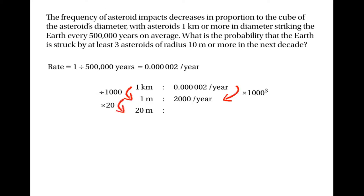Now to turn one metre into 20 metres, we need to multiply by a factor of 20. And if we multiply that diameter by a factor of 20, we'll need to divide the rate by a factor of 20 cubed. So now we need to do the sum 2,000 divided by 20 cubed, which gives us the answer 0.25 per year. So this shows that asteroids of diameter 20 metres strike the Earth at a rate of 0.25 per year.